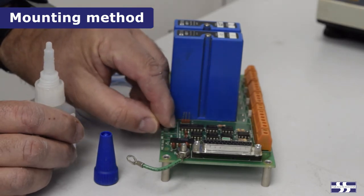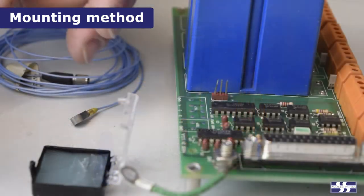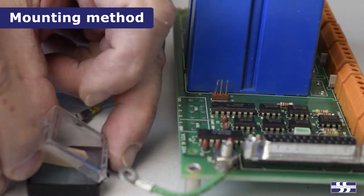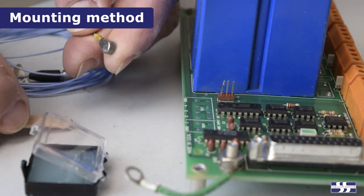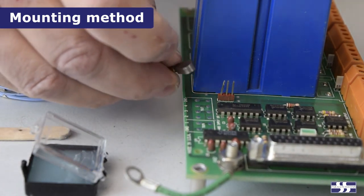For quick tests where the accelerometer needs to be moved around frequently, or for short duration tests, wax can also be used as an attachment method. However, this method can dampen the higher frequency response of the accelerometer.